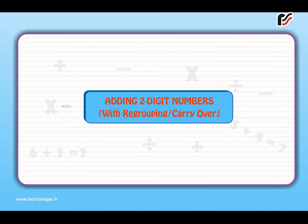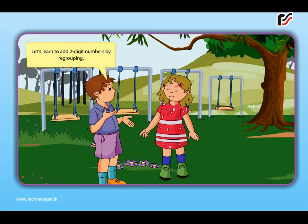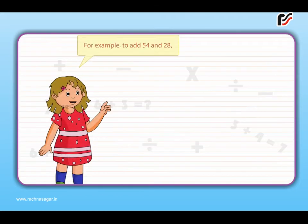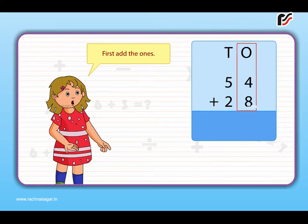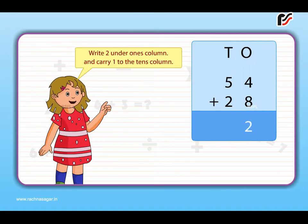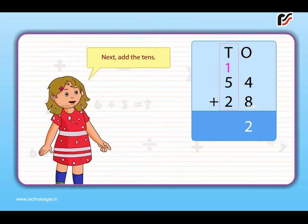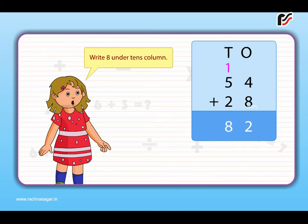Adding 2-digit numbers with regrouping or carryover. Let's learn to add 2-digit numbers by regrouping. For example, to add 54 and 28, first add the ones: 4 plus 8 is equal to 12 ones. Write 2 under the ones column and carry 1 to the tens column. Next add the tens: 5 plus 2 plus 1 is equal to 8 tens. Write 8 under the tens column. Thus, the sum is 82.